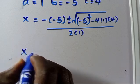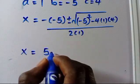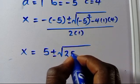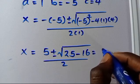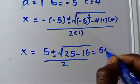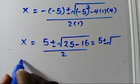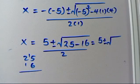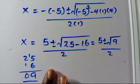From here, minus times minus gives us plus 5, plus or minus the square root of 25 minus 16, over 2. That gives us 5 plus or minus the square root of 9, over 2. And the square root of 9 is 3, since 9 equals 3 squared.